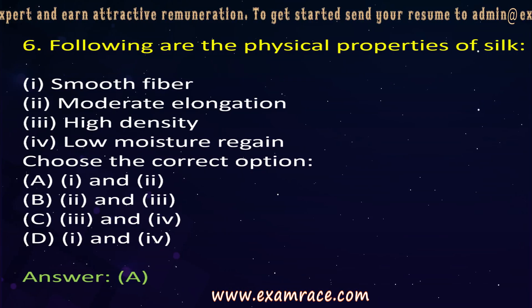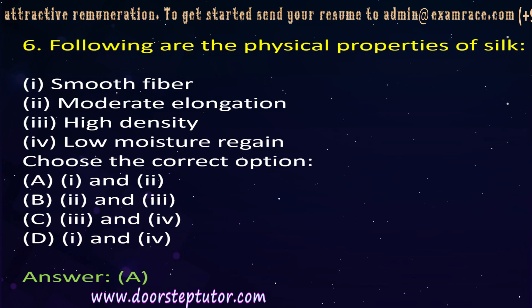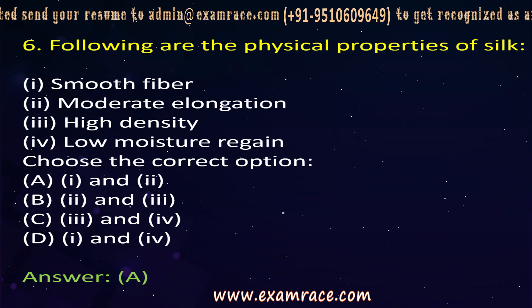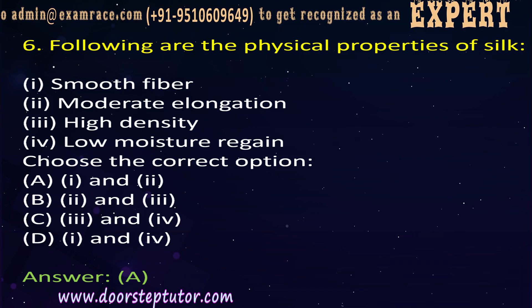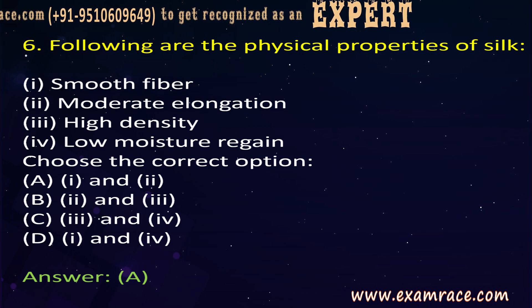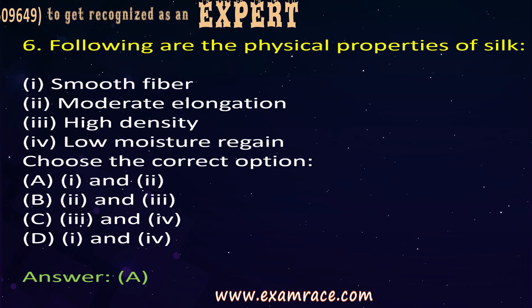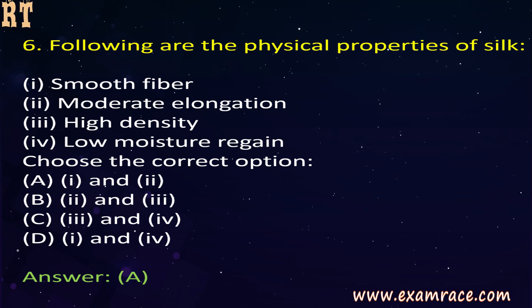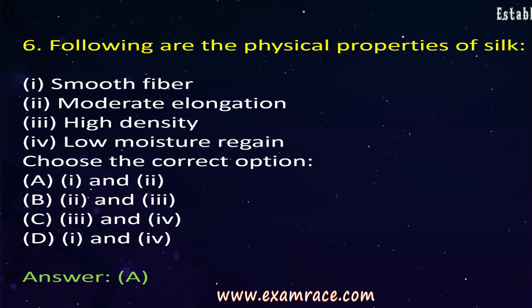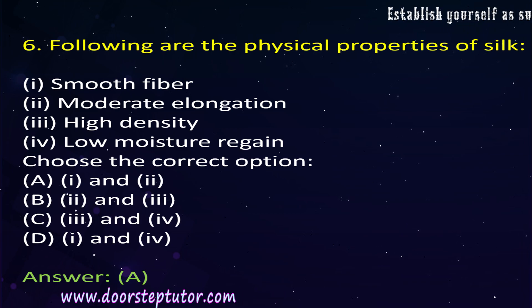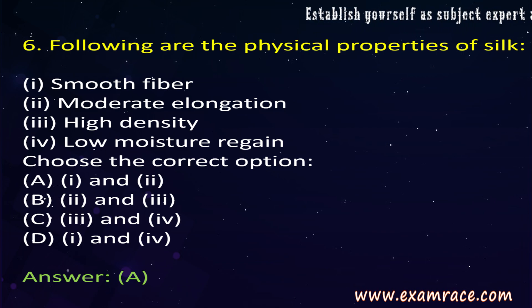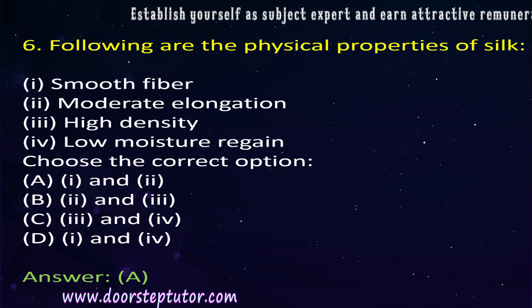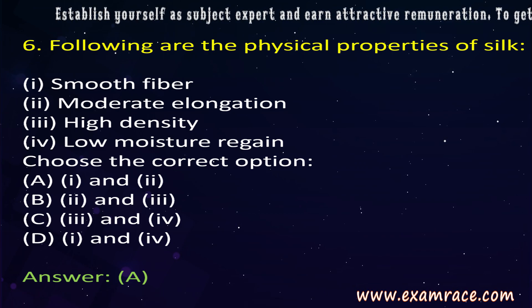The next question is about the physical properties of silk. Silk is a protein fiber and is considered the queen of all fibers. Its physical properties include being smooth and strong in nature. It has high resiliency and moderate elongation. It can get damaged by sunlight and treatment with chlorine bleaches can cause yellow discoloration. It also dries very quickly and is lustrous. The correct answer is: smooth in nature and moderate elongation.